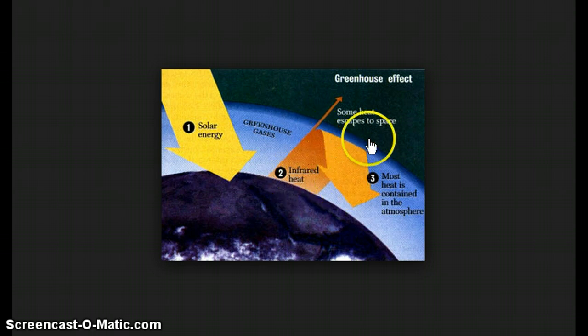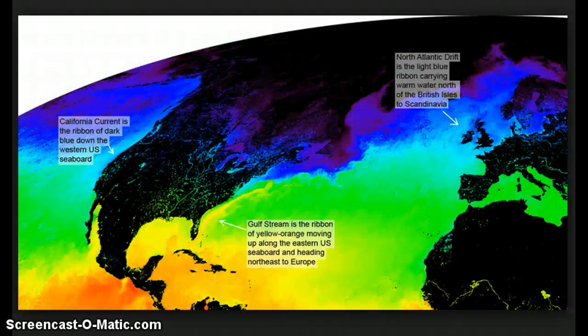So the warmer the land is, or the warmer the water is under the atmosphere, the warmer the temperature will be. So if we look at a map that shows the ocean currents in the United States,